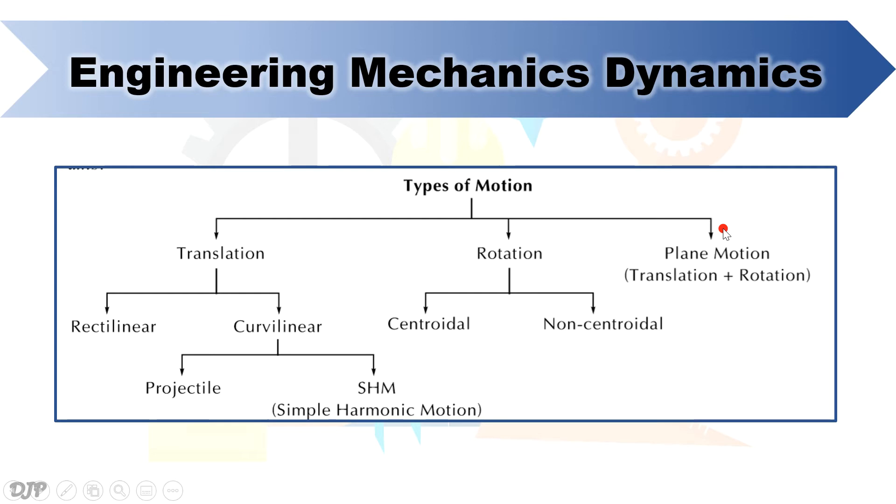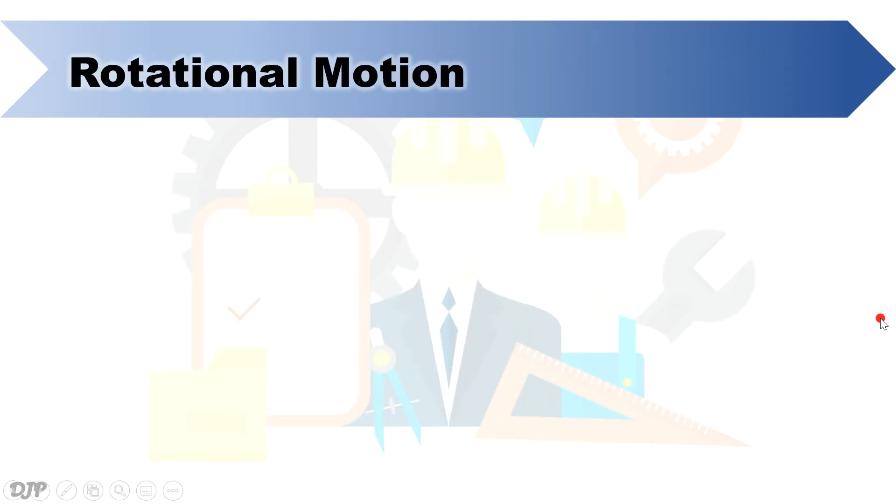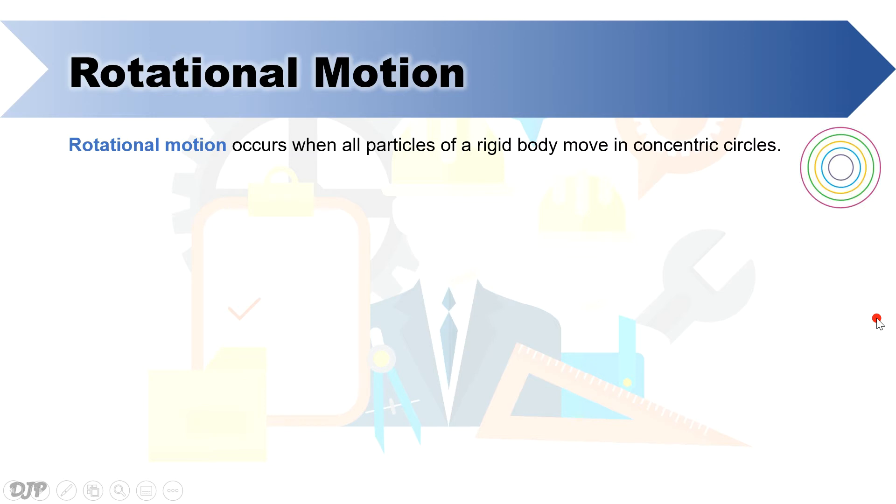The next type of motion that we will tackle is rotational motion. Please take note that under this type, there is centroidal rotation and non-centroidal rotation. So what is rotational motion? It is simply a motion in where all particles of a rigid body move in concentric circles, or group of circles with various diameter, yet with same center point. In this type of motion, we are dealing only with group of particles or rigid body. If the problem can be idealized as a particle, then you don't have to investigate the rotational motion. Rotational motion is only for rigid bodies.